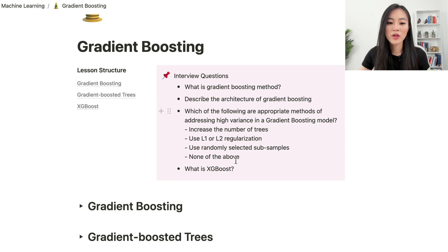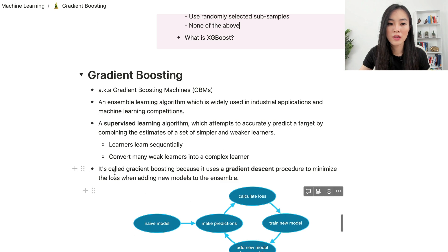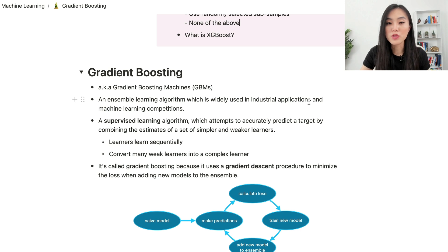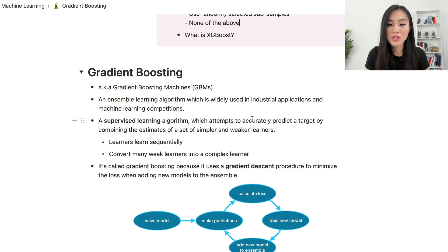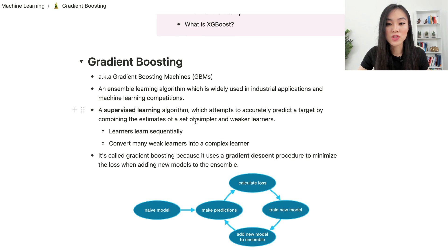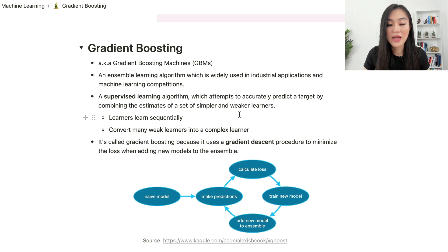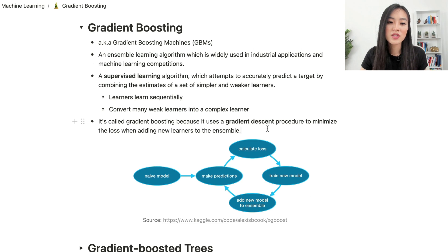Gradient boosting is also known as gradient boosting machines or GBMs. It's an ensemble learning algorithm widely used in industrial applications and machine learning competitions. It's also a supervised learning algorithm which attempts to accurately predict a target by combining the estimates of a set of simpler, weaker learners. These weak learners learn sequentially, and the algorithm converts many weak learners into a complex learner.